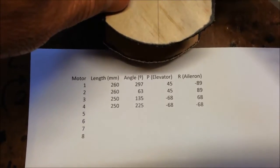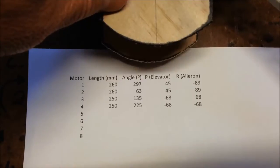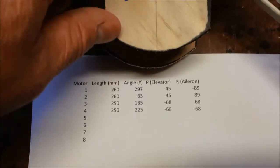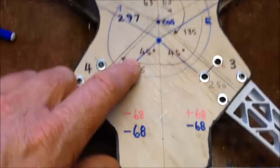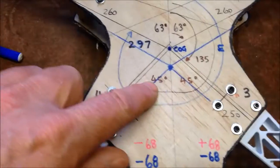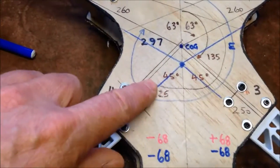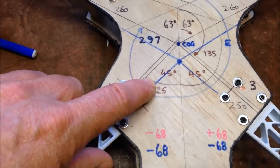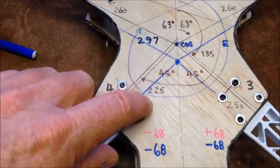Motor number 3 is 135 degrees angle, and motor number 4 going around to here is 225 degrees.